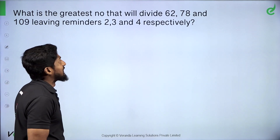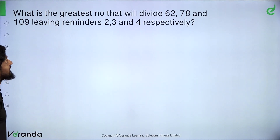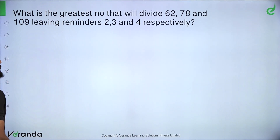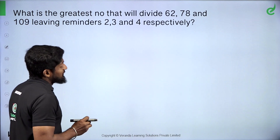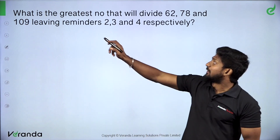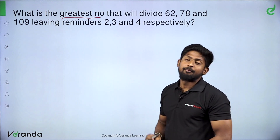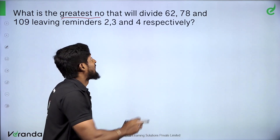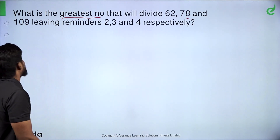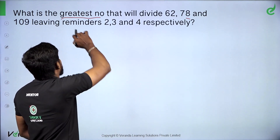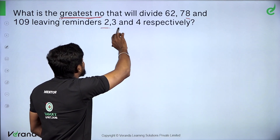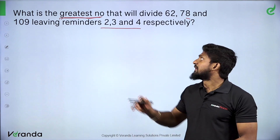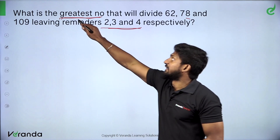When remainders are 2, 3, and 4 respectively, what does that tell us? The greatest number in this context is the HCF — also called Mipoma or Mipova Khan. For example, with numbers 62, 78, and 190, we look at differences of 2, 4, 2, 3, and 4. The greatest number is the HCF.